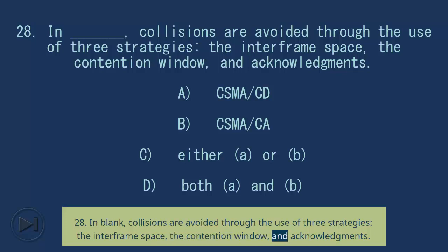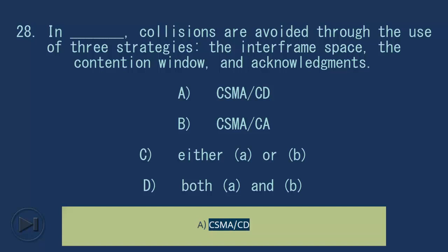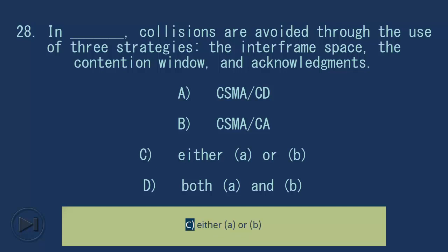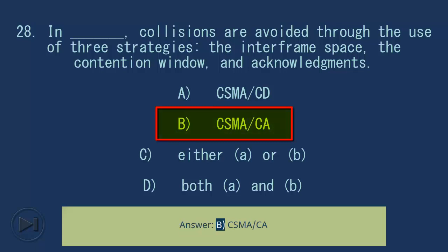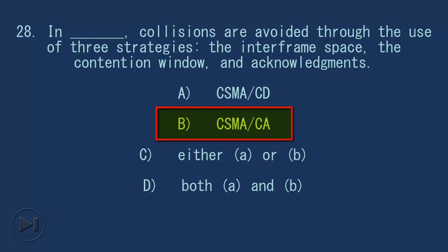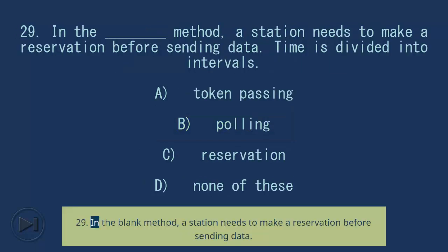Question 28: In blank, collisions are avoided through the use of three strategies: the interframe space, the contention window, and acknowledgments. A) CSMA/CD, B) CSMA/CA, C) Either A or B, D) Both A and B. Answer: B) CSMA/CA.